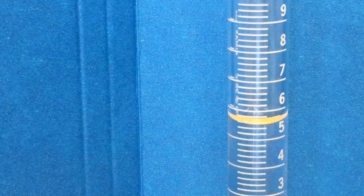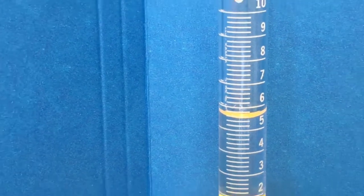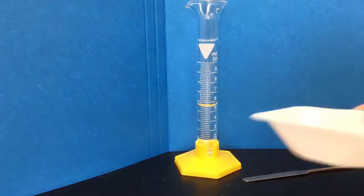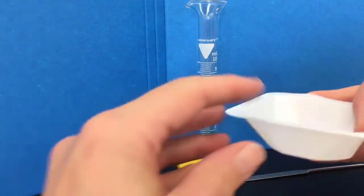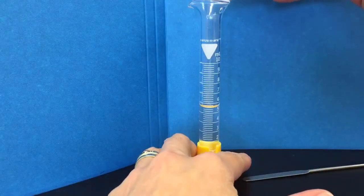So I'm going to record 5.6 milliliters of water. I have my solid that I measured out on my analytical balance, and we're going to carefully pour that into the graduated cylinder.